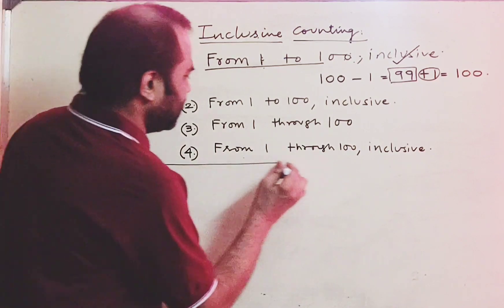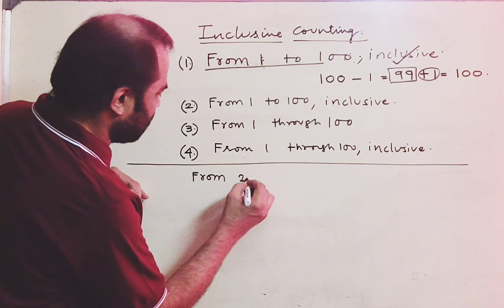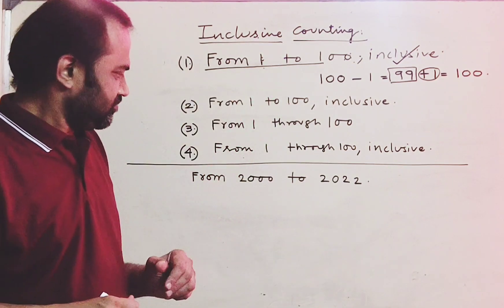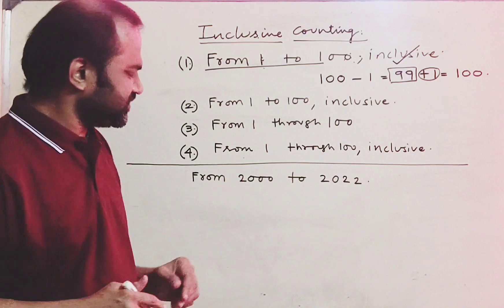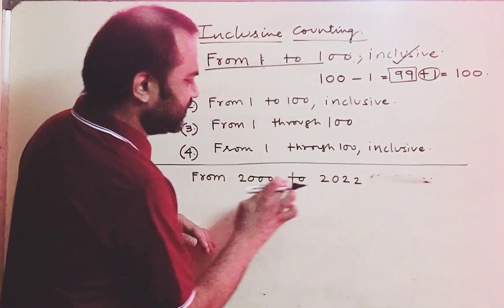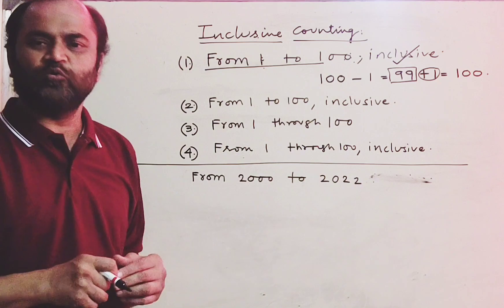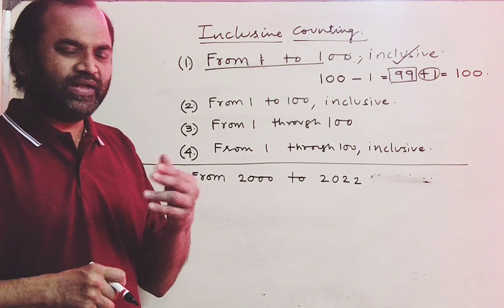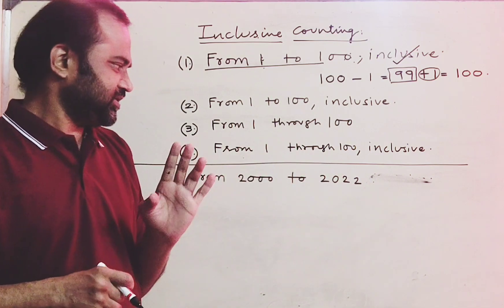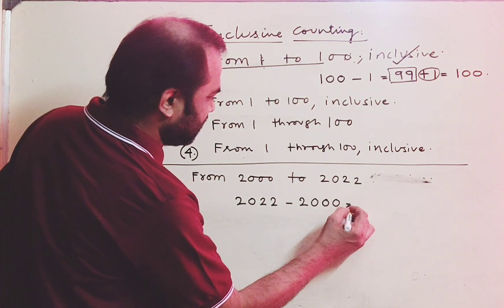Now with this knowledge let us do a simple question. I would like you to count how many years are there from 2000 to 2022. As I said earlier, whether the word inclusive exists or does not exist, by default the meaning of this expression is inclusive counting. That means count the number of years between these two and also include the first and the last. Let us first find the difference: the difference of these two numbers is 22.